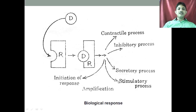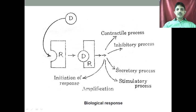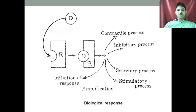Whenever we talk about the biological responses — the drug will come and bind to the receptor, so drug-receptor binding occurs. After drug-receptor binding, there may be different types of effects. For example, it may cause stimulation, initiation response, or amplification. It may cause an inhibitory effect, a contractile effect, a secretory effect, an irritation effect, a cytotoxic effect, etc. These are the responses that may be triggered.